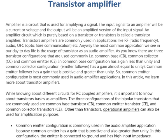There are three transistor configurations commonly used: common base (CB), common collector (CC), and common emitter (CE). The common base configuration has a gain less than unity, and the emitter follower has a gain that is positive and greater than unity. Therefore, the common emitter configuration is most commonly used in amplifier circuits and applications.